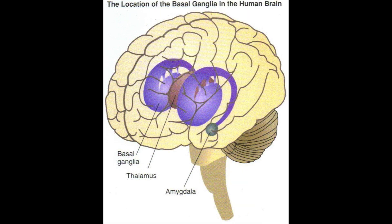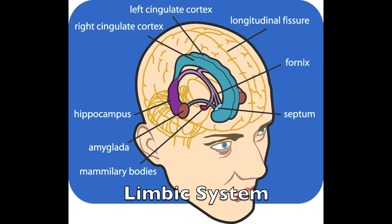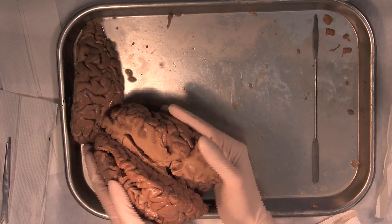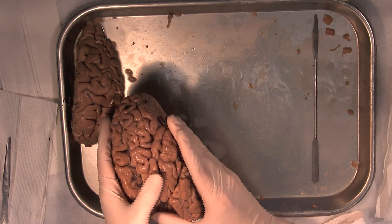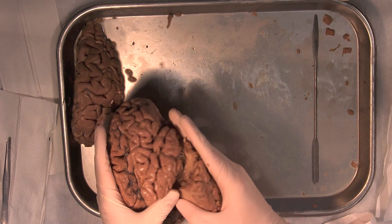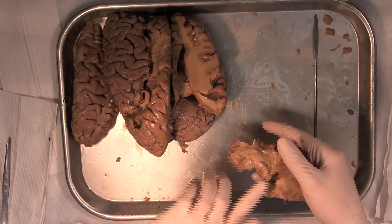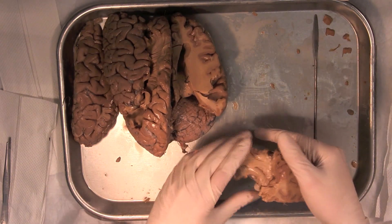There's the basal ganglia, which is an internal brain structure that can't be seen from the surface of the brain, and finally there's the limbic system, which is where we'll find our next brain structure — the hippocampus. The hippocampus is found in the temporal lobe, and we've already cut it out here, so I'm just going to remove part of the temporal lobe to expose the hippocampus. The hippocampus is this structure right here.